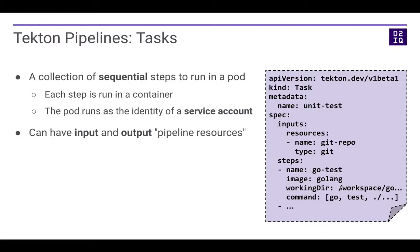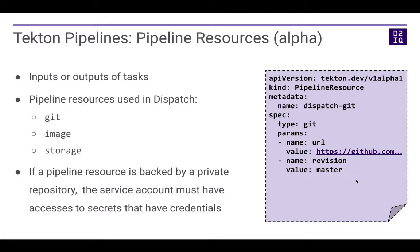The second concept in Tekton is pipeline resources. Although Tekton has moved to beta, pipeline resources are still only in the alpha API, and there is an ongoing effort to refine the pipeline resource API and eventually bring it to beta. Resources represent implicit output of tasks. The resource types we use in Dispatch are Git resources, image resources, and storage resources. If a resource is backed by a private repository, the service account that launched the tasks must have access to the secrets with the credentials. Here is an example: it's called dispatch-git, which has parameters for the URL of a GitHub repo and a particular revision to run for a given task.